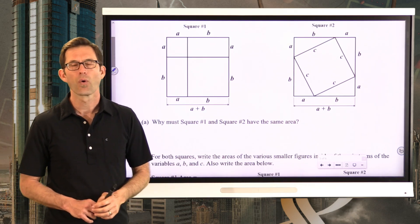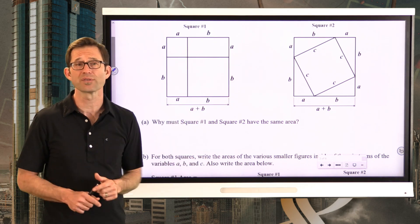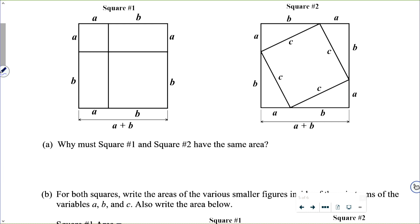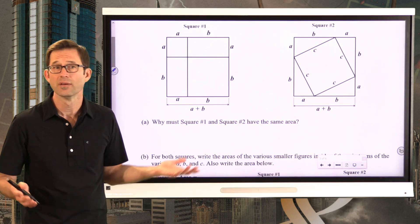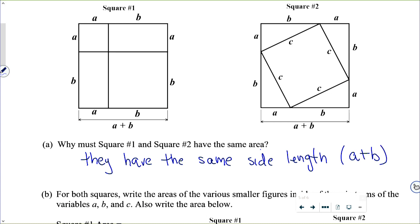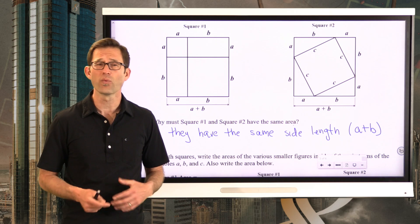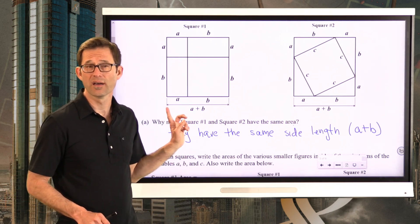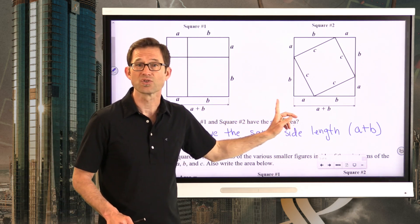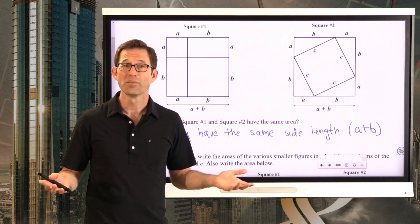A very important thing to observe right from the beginning: why do the two squares have the same area? Why must square one and square two have the same area? They have the same side lengths — and that's really critical. Those side lengths happen to be A plus B. Maybe A is three and B is four, maybe A is seven and B is three — it really doesn't matter. At the end of the day, this square has a length of A plus B and A plus B, and this square also has a length of A plus B and A plus B. Therefore, since they have the same side lengths, they've got to have the same area — they are literally the same square.